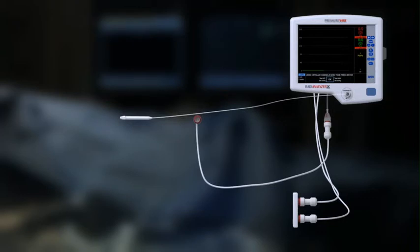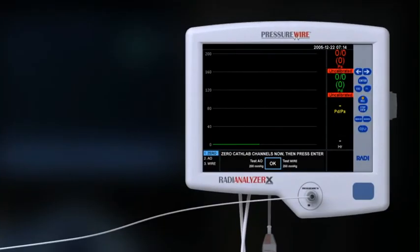When the instrument is turned on, the optional automatic setup sequence is displayed. Begin by zeroing CATLABS pressure channels. Press ENTER to continue.